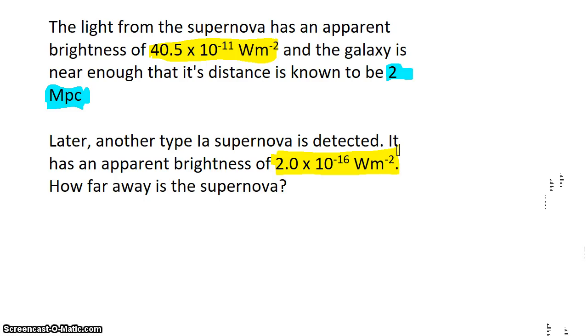So to answer this question, we need to know the relationship between the apparent brightness of something that we see in space and the distance from us. And that relationship is that the apparent brightness is its luminosity, the total power it emits, divided by 4πd².